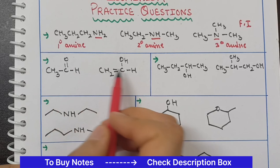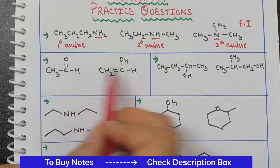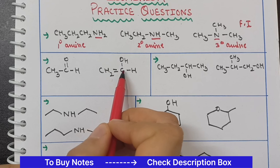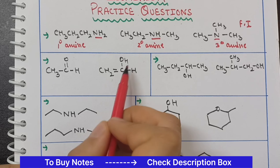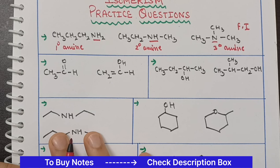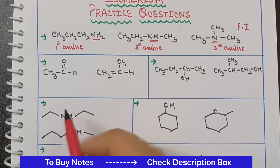Second, look at these two. The molecular formula is the same. There are 2 carbons here and 2 carbons here, 4 hydrogens here and 4 hydrogens here, and both have oxygen. The first thing you need to check is the molecular formula — both molecular formulas are the same.